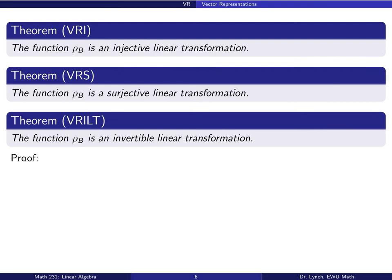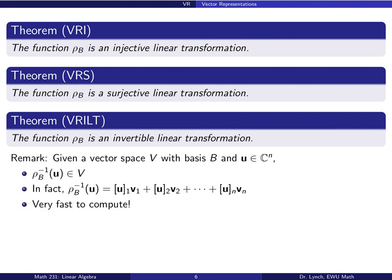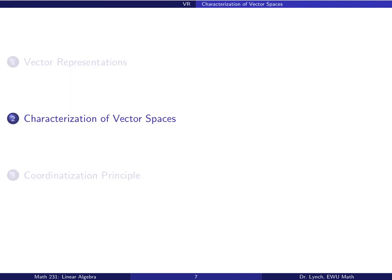Since ρ_b is both injective and surjective, it is bijective, hence invertible — an invertible linear transformation. Regarding the inverse: given a vector space V with basis b and an element u in Cⁿ, the inverse ρ_b⁻¹(u) is quickly computed as the linear combination u₁v₁ + … + uₙvₙ of the basis vectors using the scalars from u.